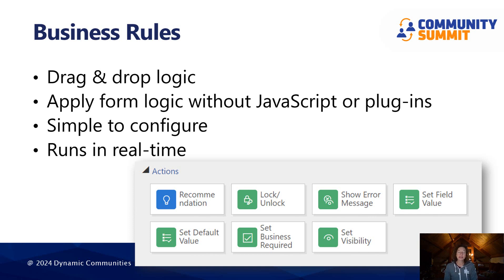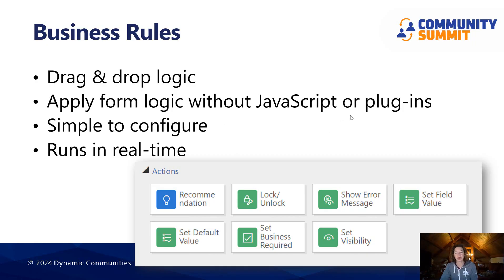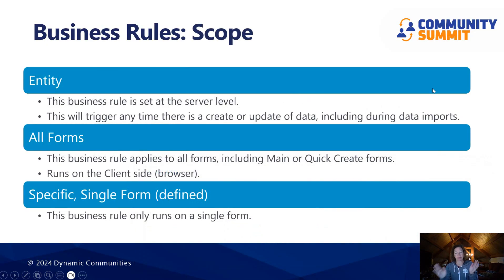Business rules involve some simple form logic that you'd apply without writing custom code or plugins, and applying it to the form. They're really simple to configure and they run in real time — that means when the condition is met, your business rule will run. The screenshot here is showing you all of the available actions in your toolkit. We are going to look at a bunch of these in specifics, but first let's talk about some of the important things.